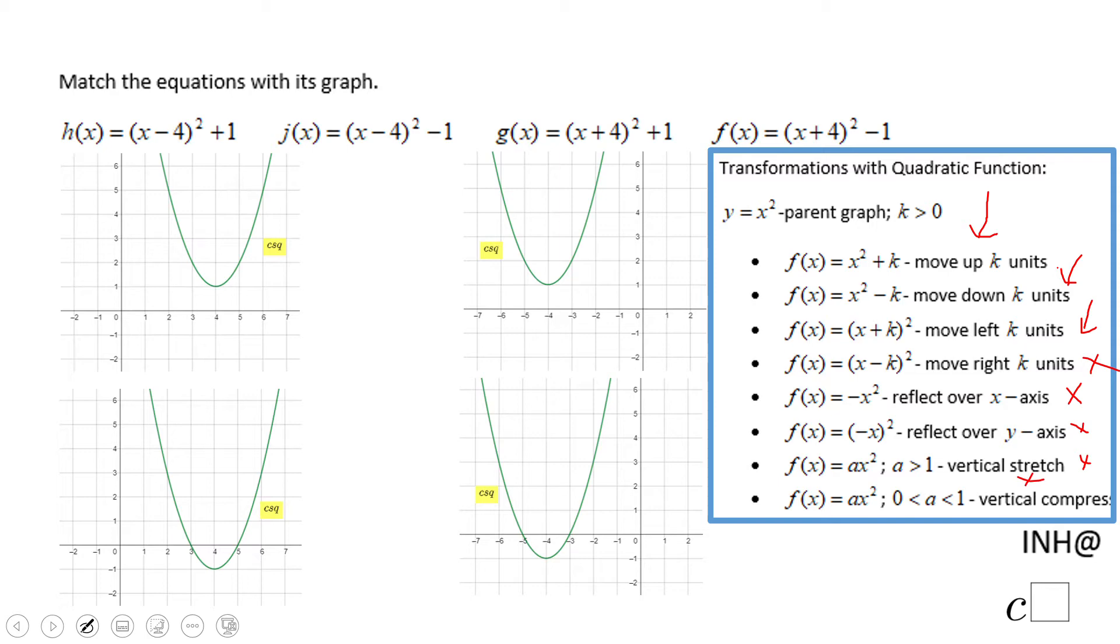In these four problems we have here we just have rigid transformations. We notice here x minus 4 and x plus 1. That tells us that the graph is gonna move four units right and one unit up, which tells us the graph is this guy. So this goes here.